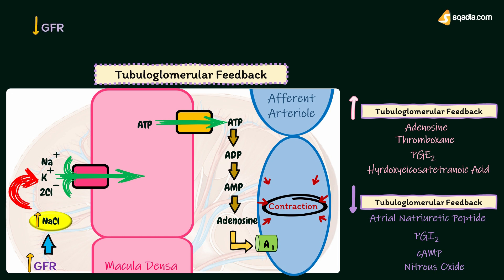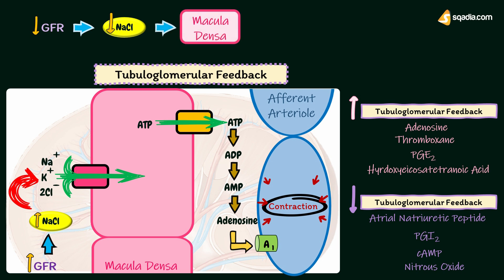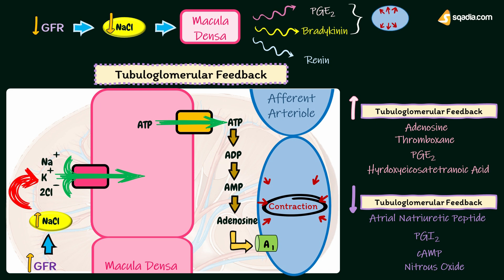When GFR decreases, the concentration of sodium chloride decreases in the filtrate. Macula densa then secretes prostaglandin E2, bradykinin, and renin. Prostaglandin E2 and bradykinin cause dilatation of the afferent arteriole, while renin induces the formation of angiotensin II, which causes constriction of the efferent arteriole. The dilatation of the afferent arteriole and constriction of the efferent arteriole together lead to an increase in glomerular blood flow and GFR.